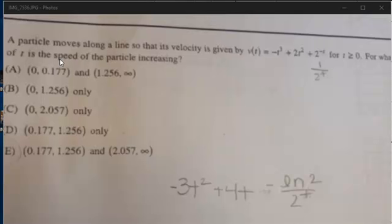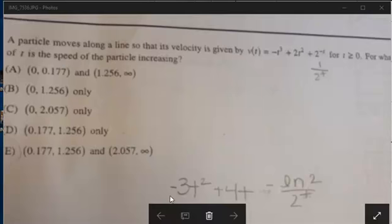Now, the velocity will be increasing wherever the derivative is positive. And as you can see, we have the derivative here, which is just a result of our derivative rules: -3t² + 4t - ln(2)/2^t, if you like to do it that way, which is fine. It's just a chain rule.